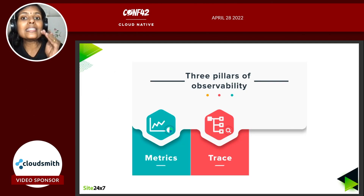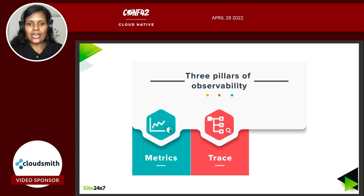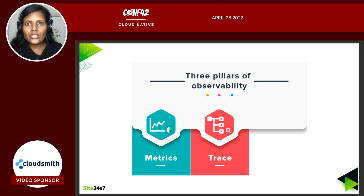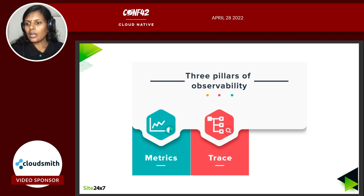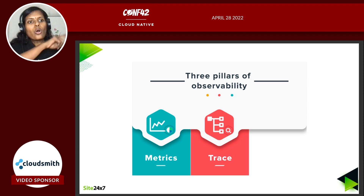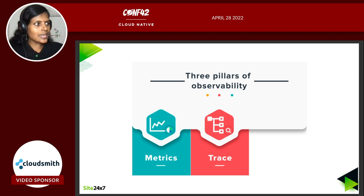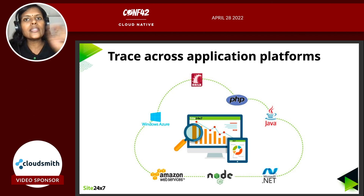The second important metric is performance. There is no point in having all components up and running if they are performing very slowly. Make sure all components are doing their work in a high-speed environment because nobody has the patience for pages that take forever to load. The second pillar is traces. In a distributed architecture, if your application is taking 10 seconds to load, you need to know exactly where it is taking more time — tracing to the exact line of code causing the issue.